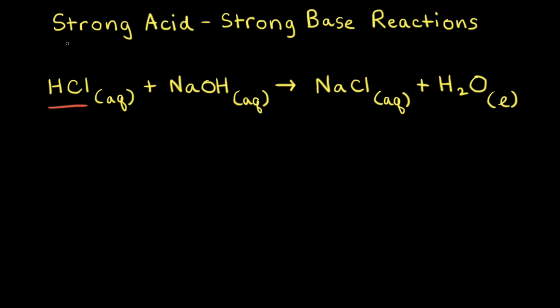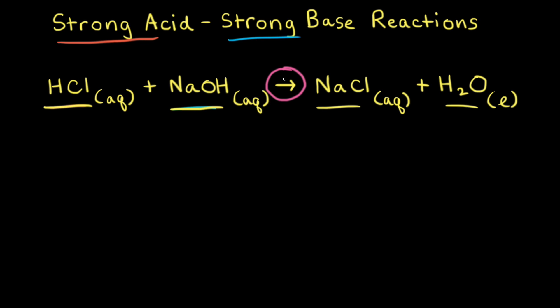Hydrochloric acid is an example of a strong acid, and sodium hydroxide is an example of a strong base. When an aqueous solution of hydrochloric acid reacts with an aqueous solution of sodium hydroxide, the products are an aqueous solution of sodium chloride and water. Since the reaction goes to completion, instead of an equilibrium arrow, there's just an arrow going to the right. This is called an acid-base neutralization reaction.